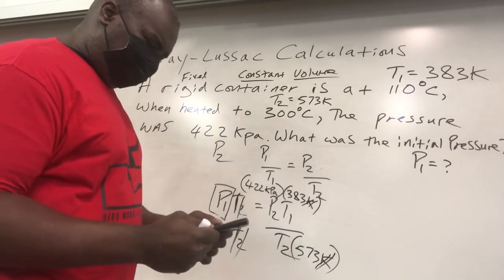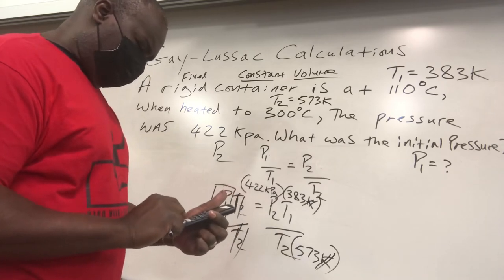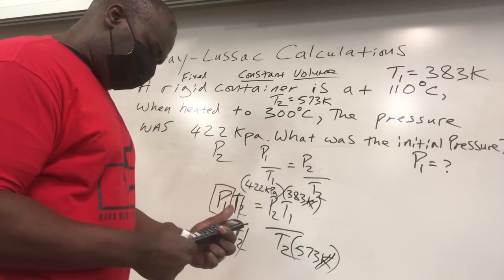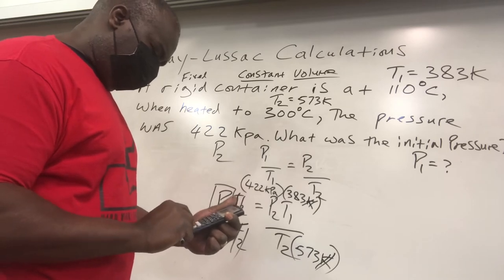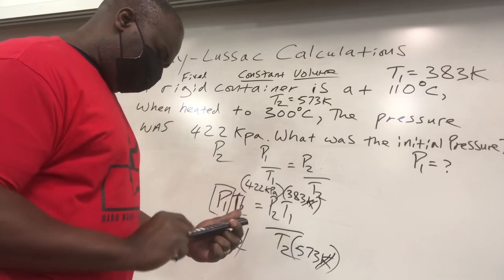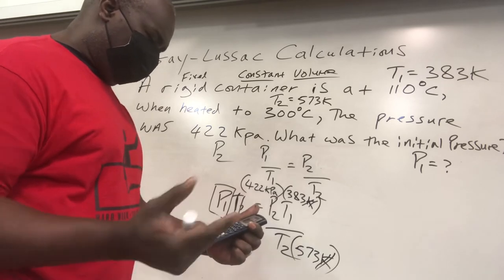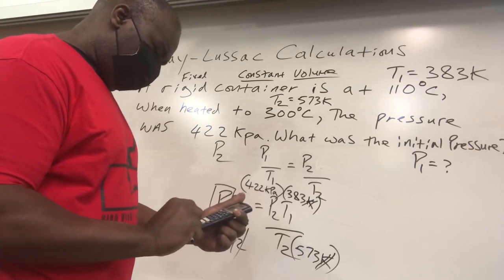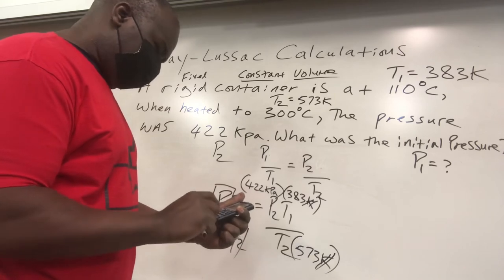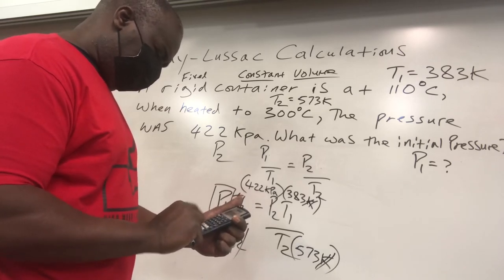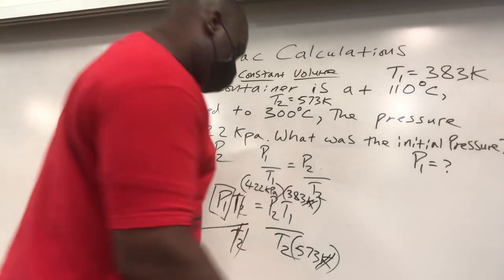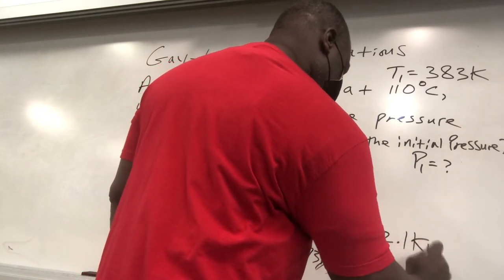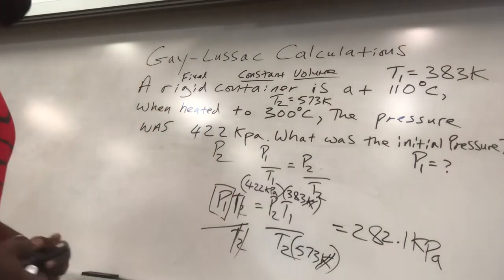So now we have to calculate. It's 422 times 383, I'm going to divide that by 573. Divided by 573. Equals to that, 282.1 approximately. I'll do it one more time just to make sure. 422 times 383 equals to that, divided by 573, and yes, 282.1 approximately. So 282.1 kPa is approximately our answer.